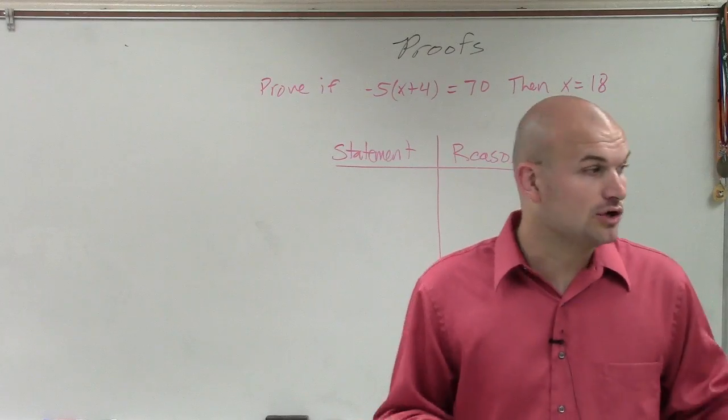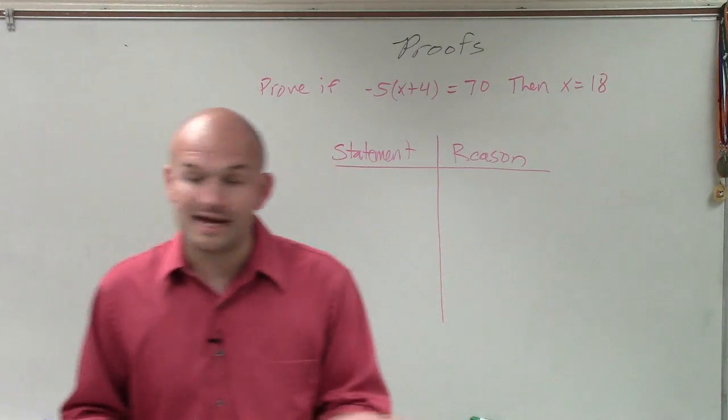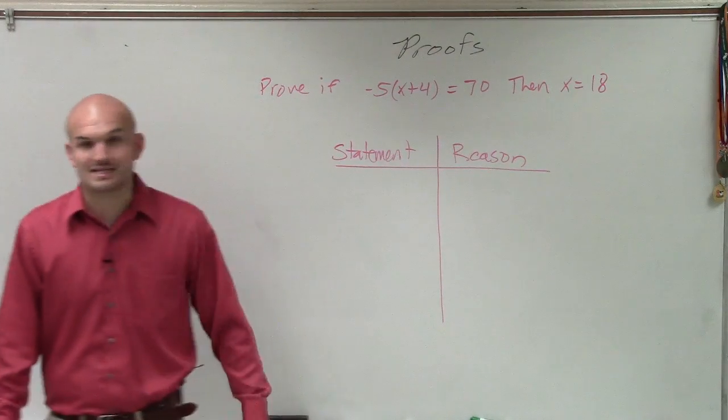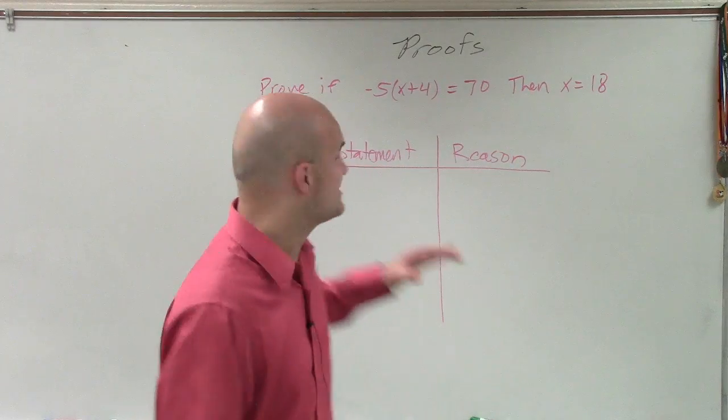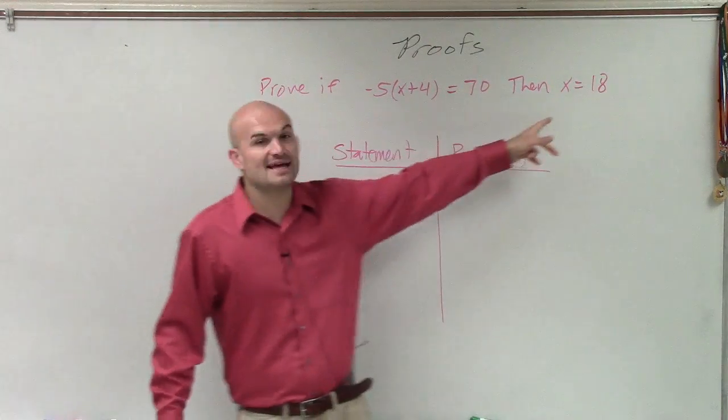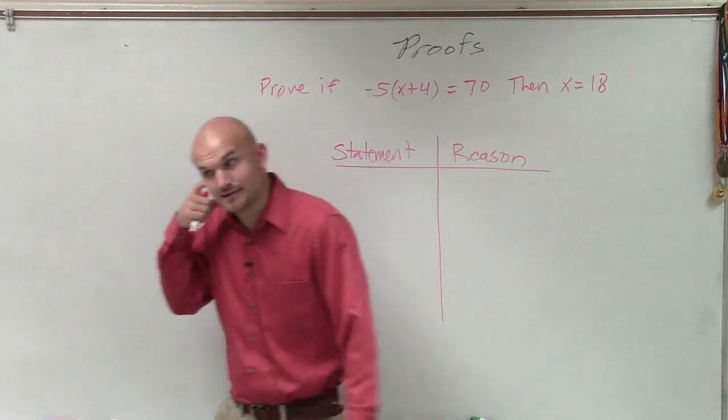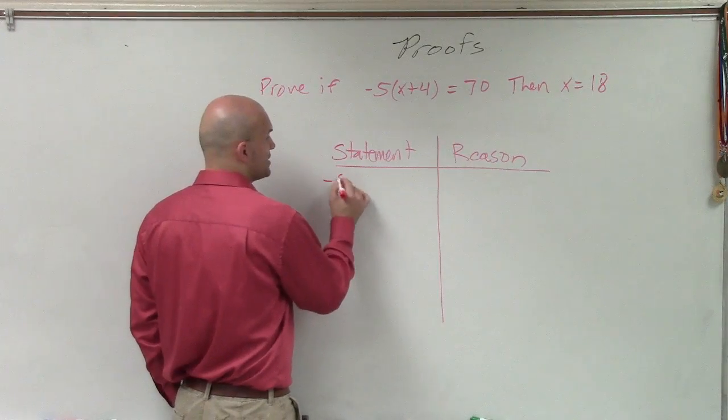So to do this, remember, our only thing is we need to be able to prove that our hypothesis is true, and our conclusion is therefore going to be true, which is then x equals 18. So the only time this is going to be false is if we obviously know this is true. That's what we're given. But then if we get another value other than 18. So the first thing we're always going to step in is let's write in what we are given.